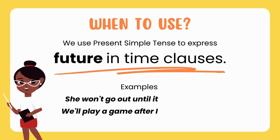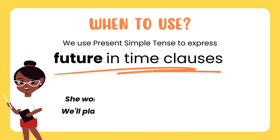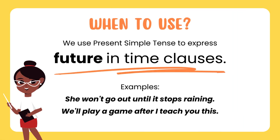When to use? We use Present Simple Tense to express the future in time clauses. Examples: She won't go out until it stops raining. We will play a game after I teach you this.